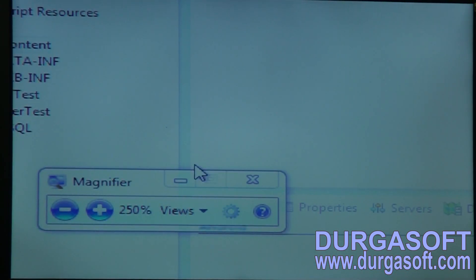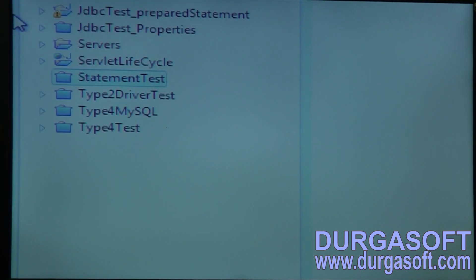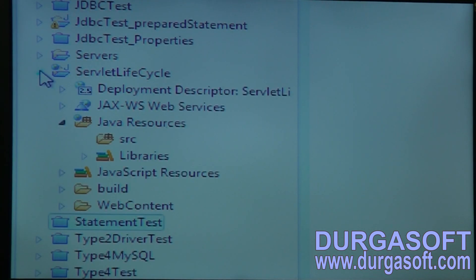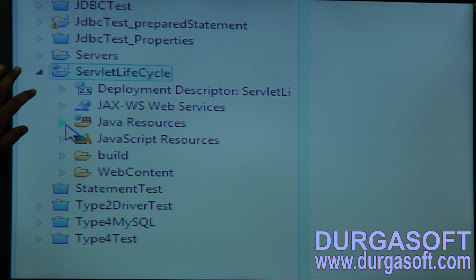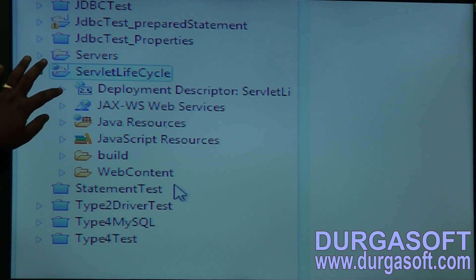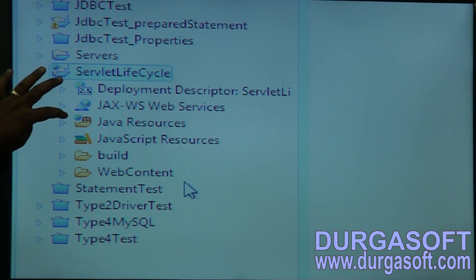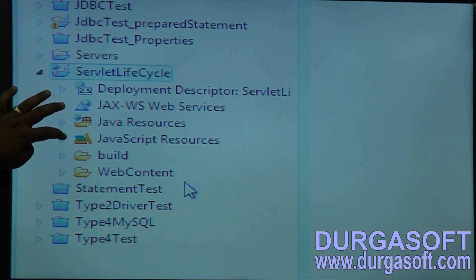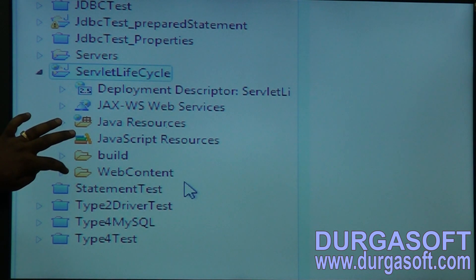When you create a project under Eclipse, it will create an application like this. How many routes we have here: deployment descriptor — here we have one deployment descriptor — and here we have one JAX-WS web services added by default, and Java resources, JavaScript resources, build path, build configurations, and web content.